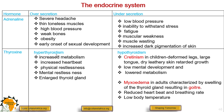Regarding thyroxine, oversecretion is called hyperthyroidism, and it leads to increased metabolism, increased heartbeat, physical restlessness, mental restlessness, and an enlarged thyroid gland.